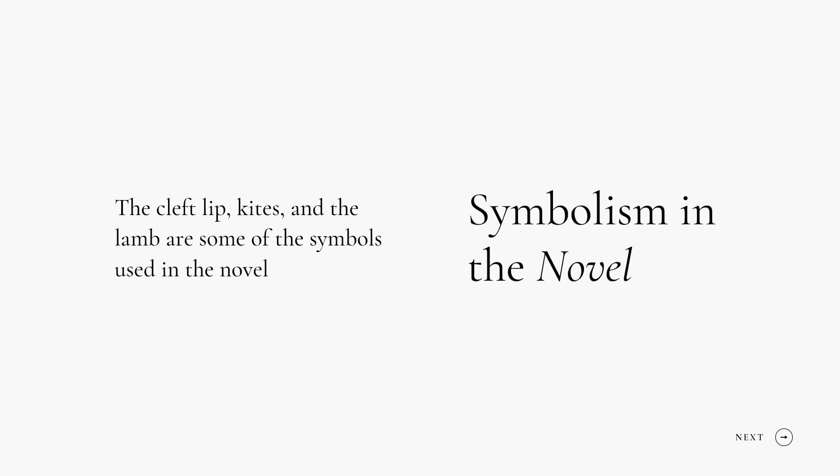Symbolism in the novel: the cleft lip, kites, and the lamb are some of the symbols used in the novel. The cleft lip signifies Hassan's innocence and vulnerability; kites signify freedom and flight; and the lamb denotes sacrifice. And I shouldn't forget also the brown corduroy pants.